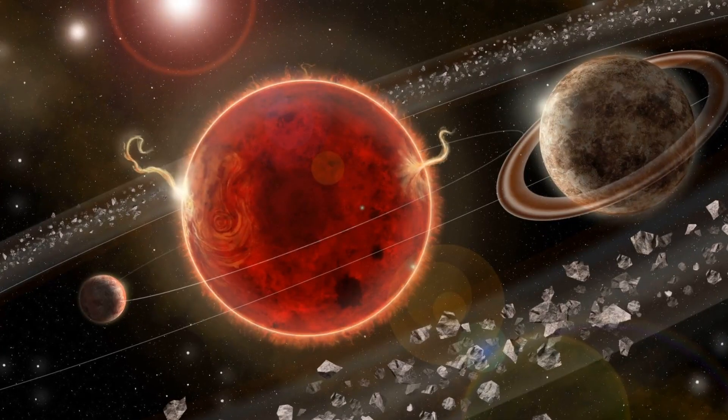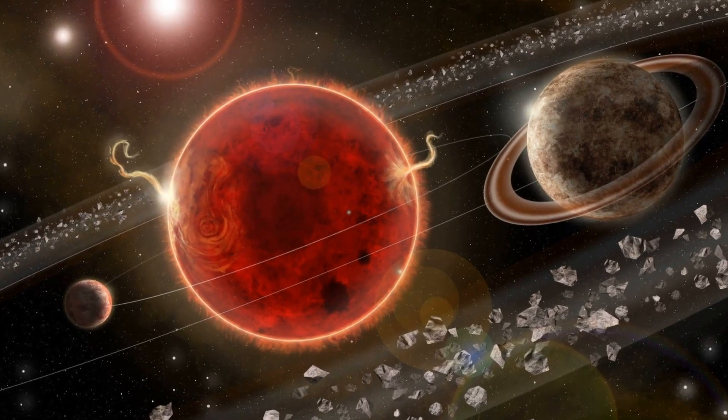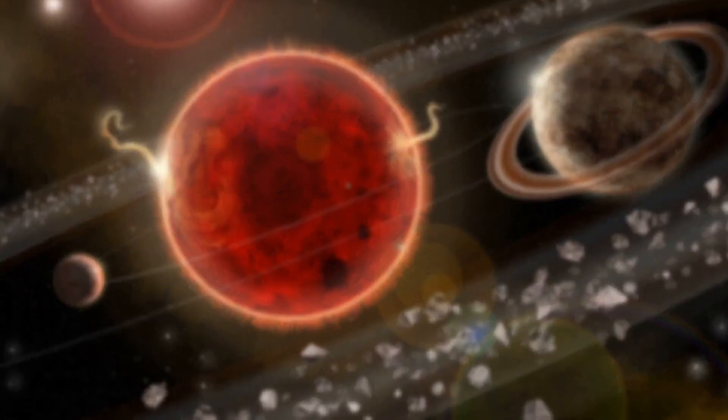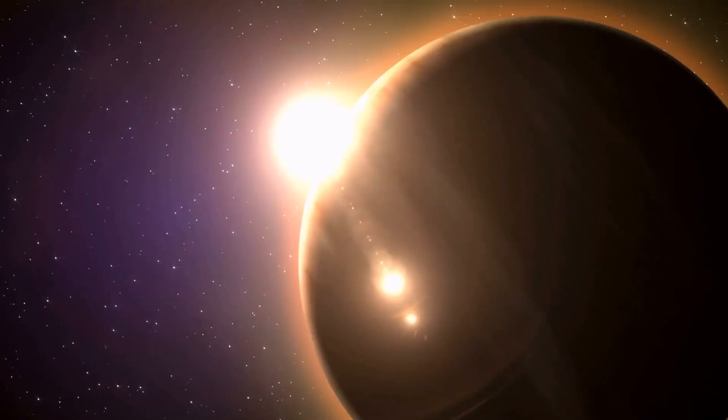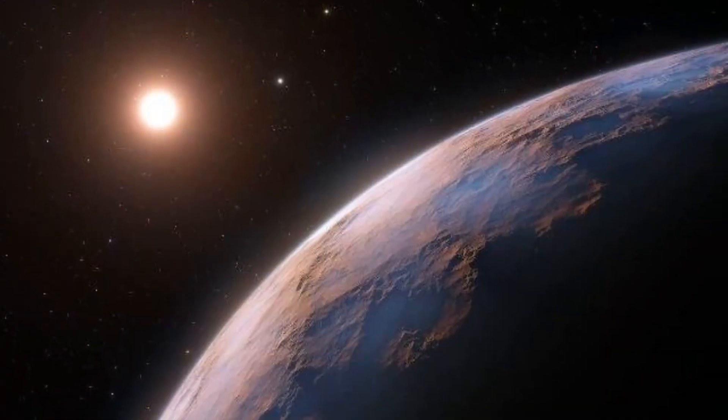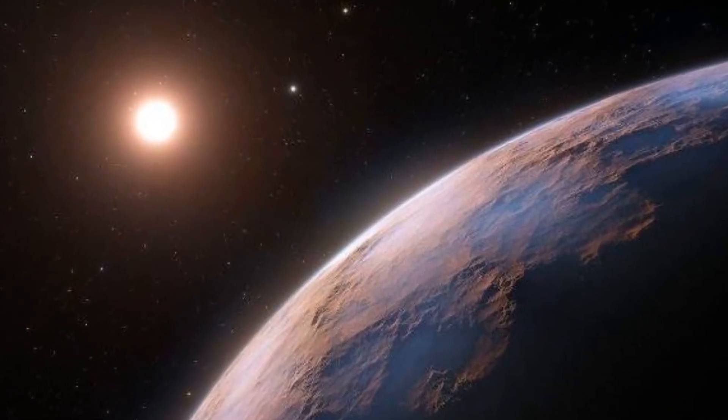Proxima Centauri b isn't on a solitary journey. It shares its cosmic dance with a super-Earth companion named Proxima Centauri c. The star system holds secrets waiting to be unraveled, perhaps hiding another companion veiled in the cosmic shadows. However, the mysteries don't conclude with its companionship.